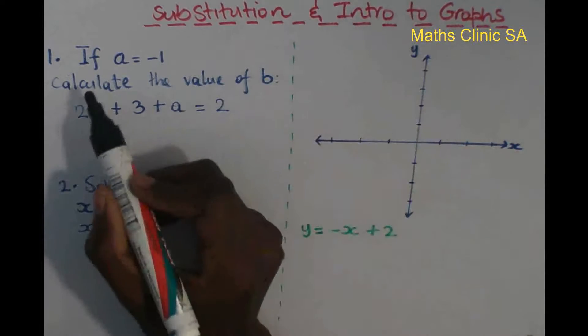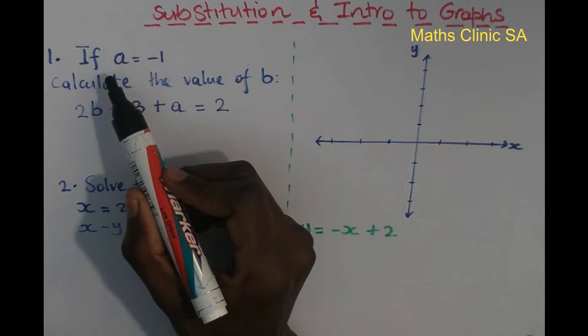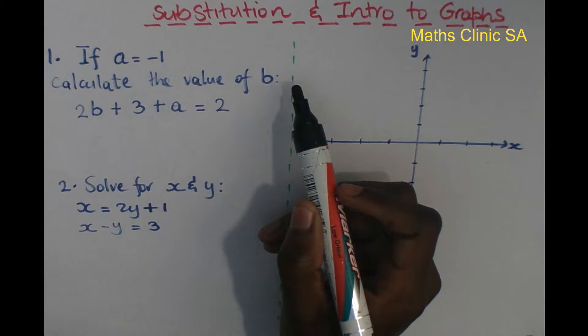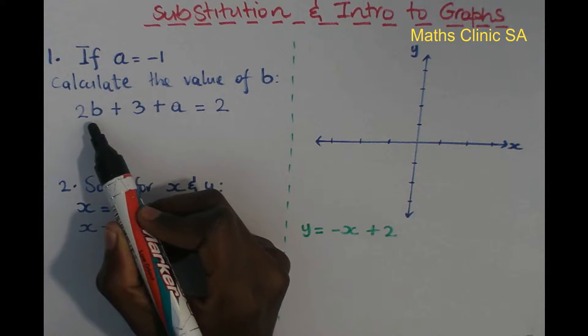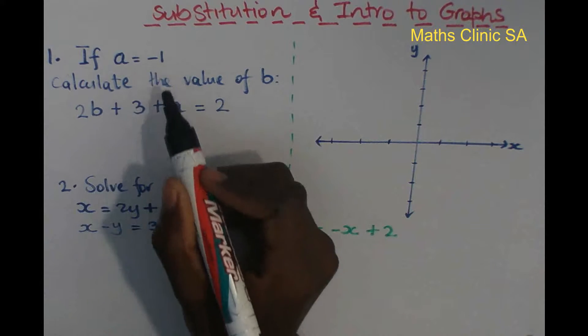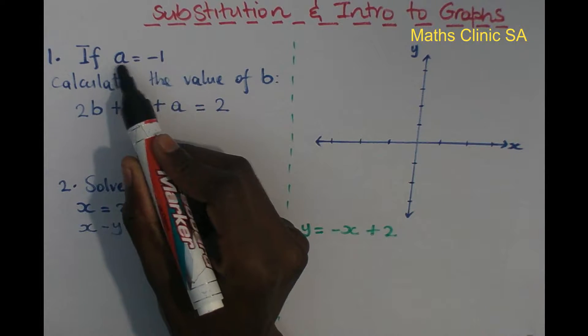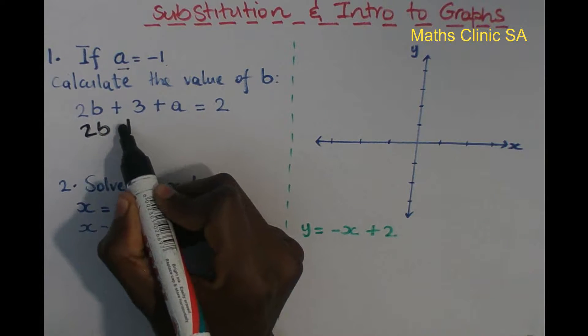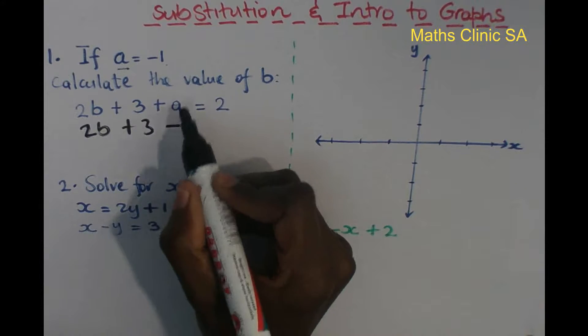If a equals minus one, calculate the value of b. We have 2b + 3 + a = 2. So substituting a = -1, we get 2b + 3 - 1 = 2.